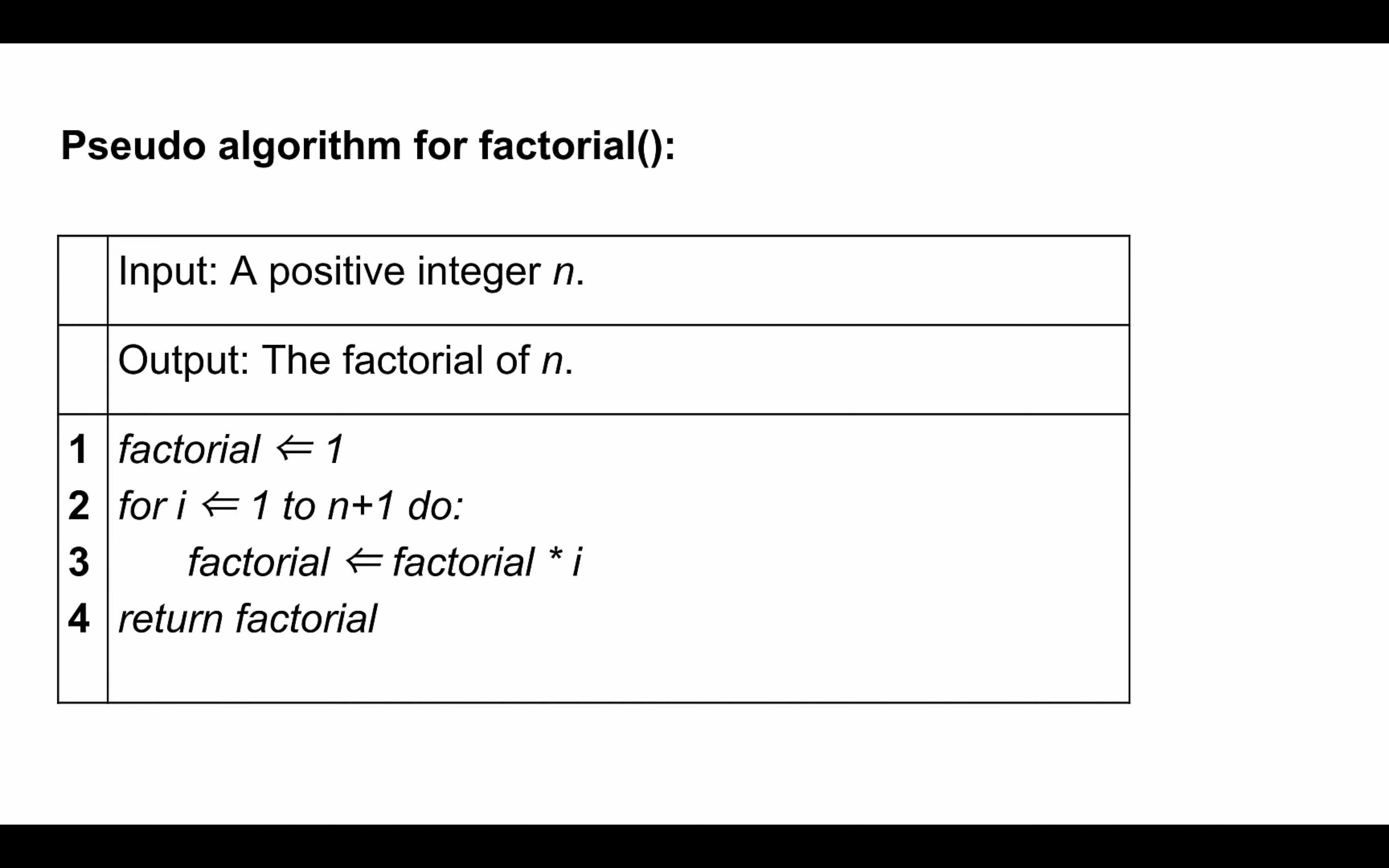Line number four executes just one basic operation of returning the value stored in factorial. So in total, factorial consists of 2 plus 3n basic operations.